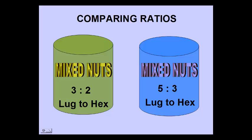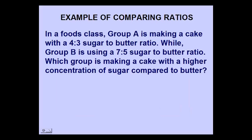This lesson is on comparing ratios. In a foods class, group A is making a cake with a 4 to 3 sugar to butter ratio, while group B is using a 7 to 5 sugar to butter ratio. Which group is making a cake with a higher concentration of sugar when compared to butter?